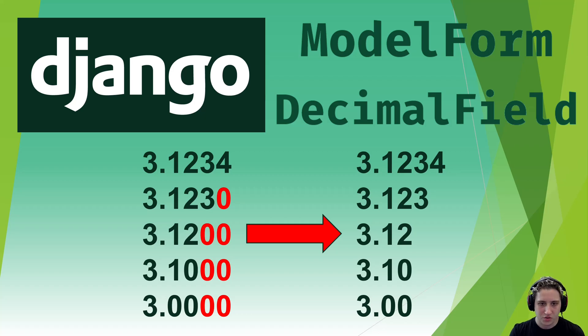All right. So in this video, I'm going to be covering how to alter the display of decimal field values within Django. The use case I'm going to be covering is dollar formatting.